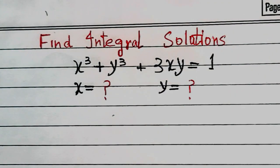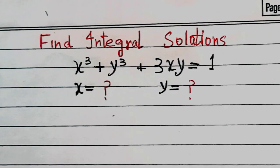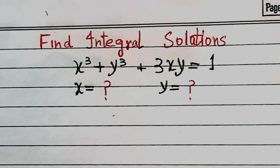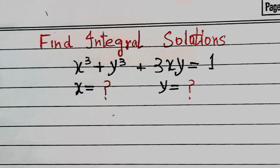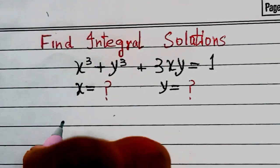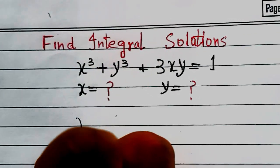Hi everyone, welcome back to Think and Derive. We have x³ + y³ + 3xy = 1, and we need to find the value of x and y. Let's start.